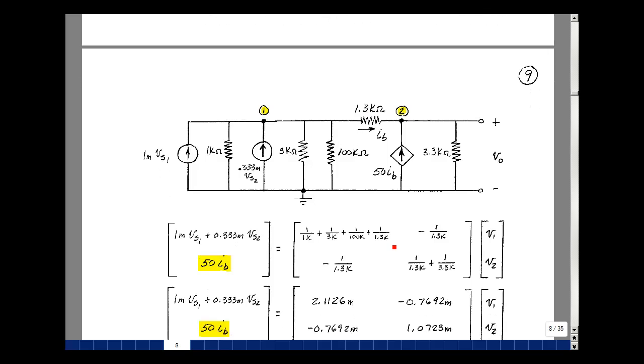So I can set up a blank matrix. I have two node equations, V1 and V2. We're going to sum the conductances at node 1. So that's 1 over 1k, 1 over 3k, 1 over 100k, 1 over 1.3k. Between nodes 1 and 2, I have a 1.3k resistor, so the negative of that. I have two current sources entering the node: V sub S1 divided by 1k and V sub S2 divided by 3k.